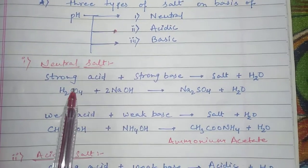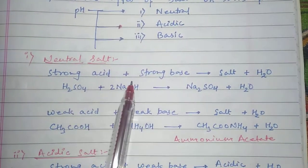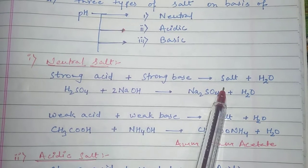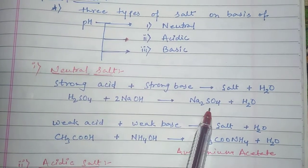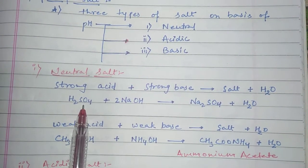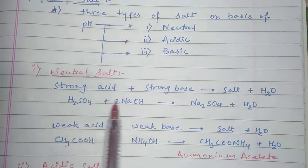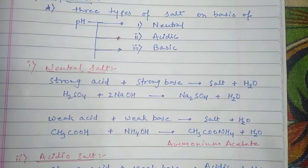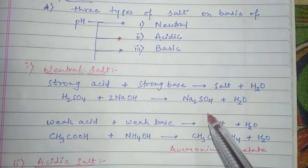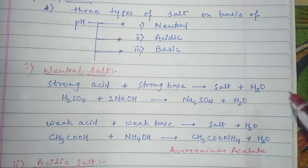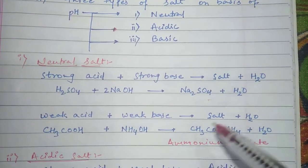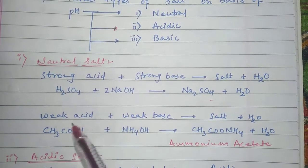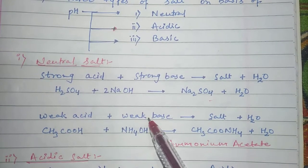Whenever a strong acid and a strong base react with each other, the salt formed is a neutral salt. Similarly, when a weak acid and a weak base both react with each other, the salt formed is also a neutral salt.